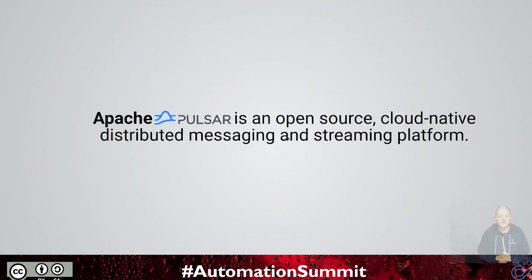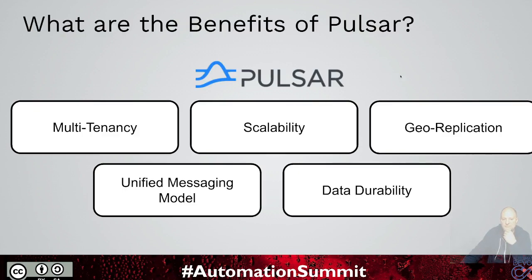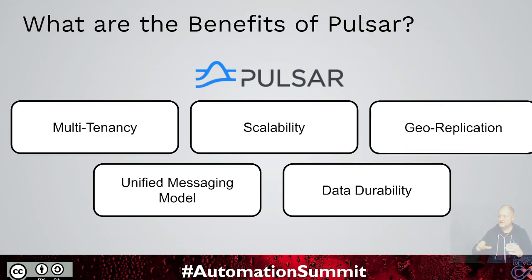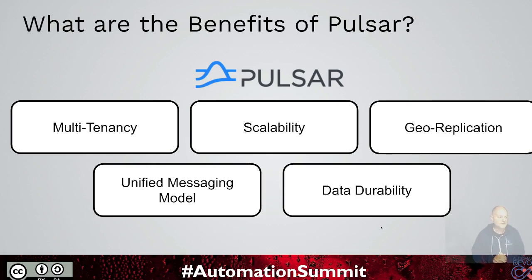Apache Pulsar is what I'm going to talk about first. It is kind of unique — it's open source, designed from the beginning to be cloud-native. It's a distributed messaging and streaming platform. Multi-tenancy is built in, so I can build one cluster, use it by multiple companies, multiple organizations, multiple business units, multiple teams. I can set up tenants, namespaces, and topics pretty easily without custom work or weird naming setups. Scalability was there from the beginning when it was designed by Yahoo to scale out to internet scale — whether you have thousands of messages or billions.